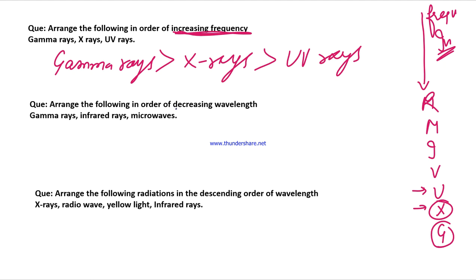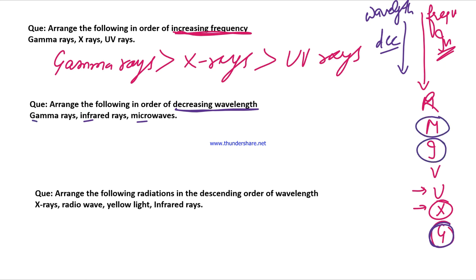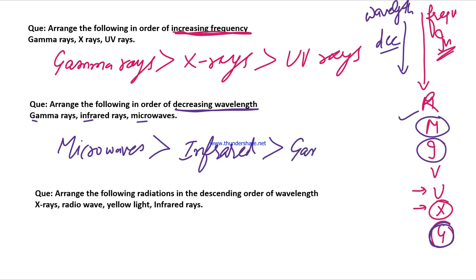Next question: Arrange the following in decreasing order of wavelength. Decreasing wavelength means starting from the largest wavelength going to the smallest. Gamma rays have the smallest wavelength, so in decreasing order gamma comes last. The order from largest to smallest wavelength is: Radio waves, Microwaves, Infrared, Visible light, UV rays, X-rays, Gamma rays. So decreasing wavelength order is done.